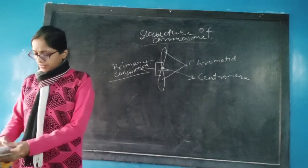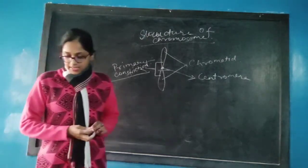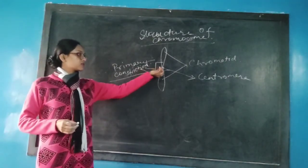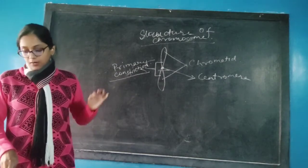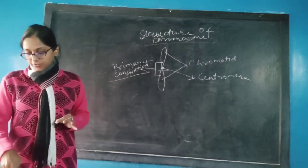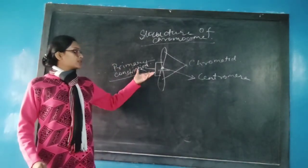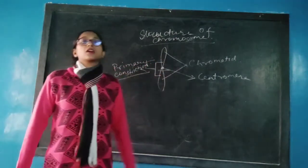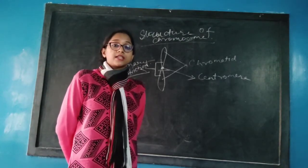The next part is the centromere. What is centromere? It is a dense coiled circular part within the primary constriction. Its function is that it is responsible for the attachment of spindle fibre with the chromatid during cell division. So the centromere is actually helping in the process of cell division — it helps to hold the spindle fibre.